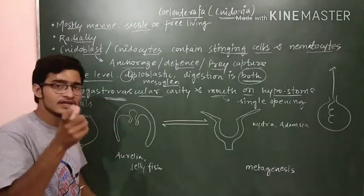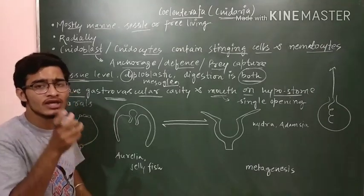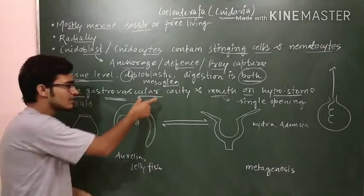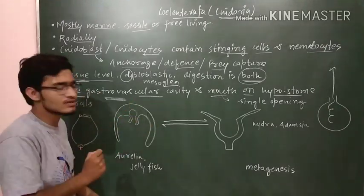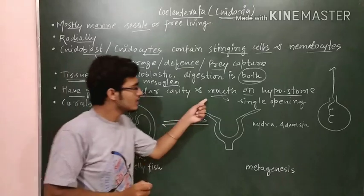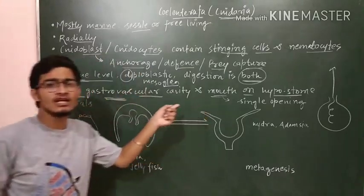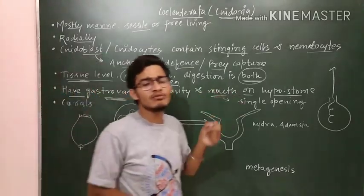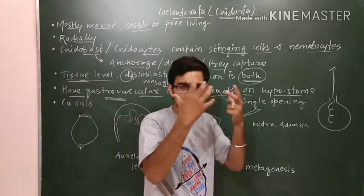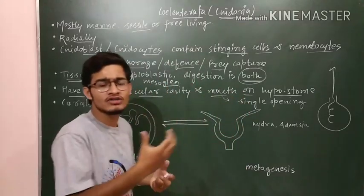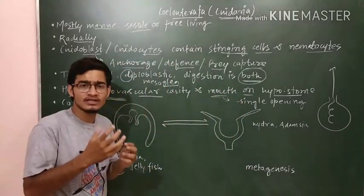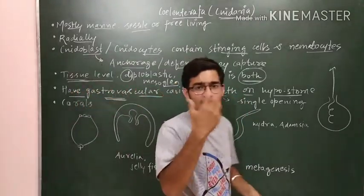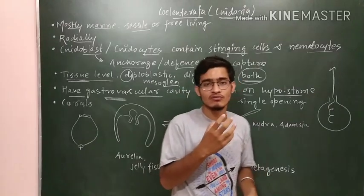The gastrovascular cavity is the central body cavity in the case of Coelenterata - this can be a direct exam question. The spongocoel is the body cavity in the case of Porifera. The mouth is present on the hypostome, which is the exposed front part of the body where the mouth is typically located.